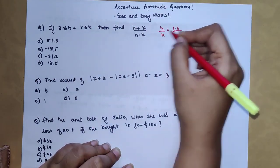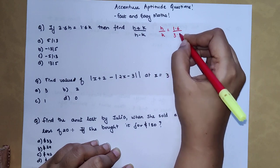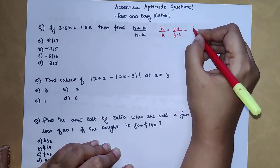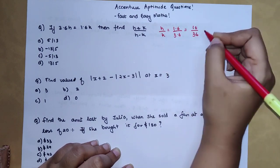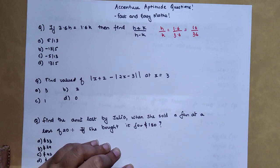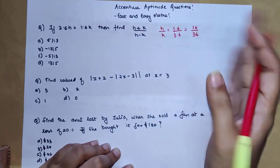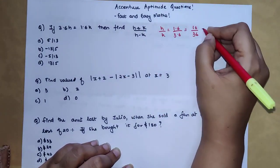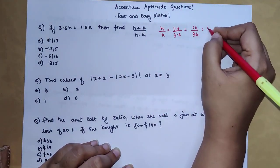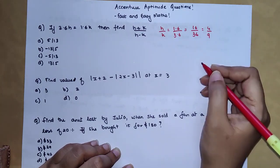So here we get 16/36 because the decimal values or the units after the decimal in numerator and denominator are both the same, so you can easily remove the decimal point. Both of them go as in the four's table, so we get 4/9.